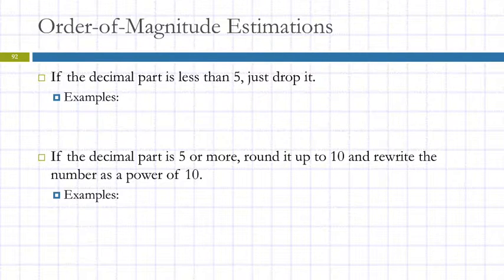How do you do that? So you look at the number. If the decimal part, the part in front of the times 10 to the something, is less than 5, just drop it. And if it's more than 5, round it up to 10, and what that does is it increases the power of 10.